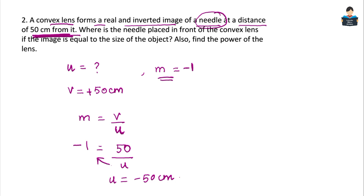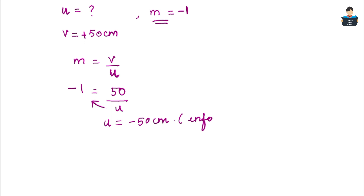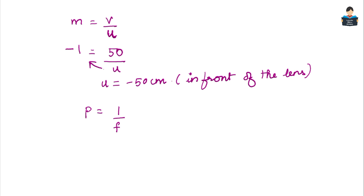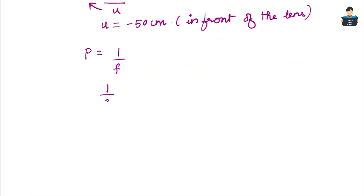Cross multiplying: u = minus 50 cm. So the needle is 50 cm in front of the lens. Now to find the focal length, we use the lens formula: 1/f = 1/v minus 1/u.